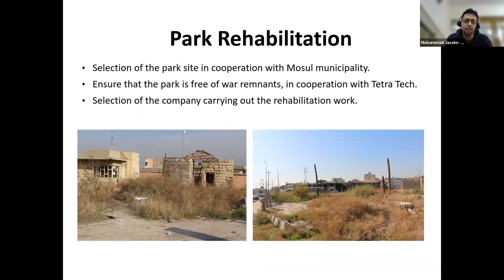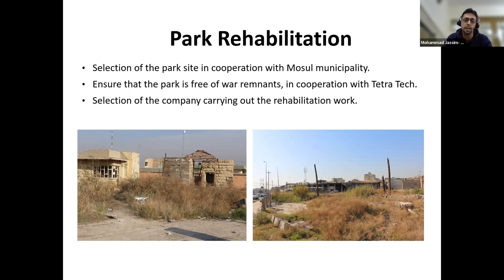Regarding the second part of the project — the rehabilitation of the park — the target area was to become a safe and recreational area. The first phase was selection of the park site in cooperation with the Mosul municipality. The second phase ensured the park was free of explosive remnants in cooperation with Tetra Tech, who made a technical survey of the location. The third phase was selection of a contracting company. These three phases — which we expected to take perhaps 10 to 20 days — actually consumed more than four months.